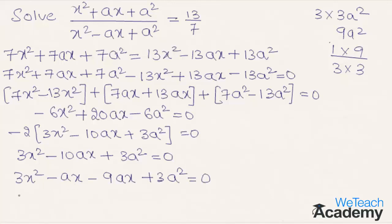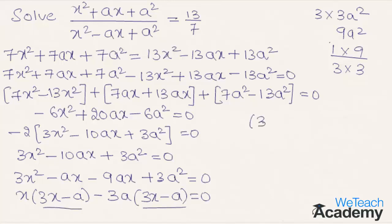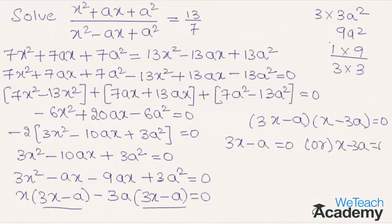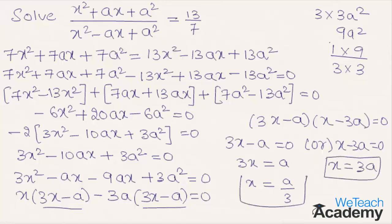From the first two terms we take x as a common factor to get x into 3x minus a, and from the last two terms we take minus 3a as a common factor to get minus 3a into 3x minus a equal to 0. Equating both factors with 0 gives 3x minus a equal to 0 or x minus 3a equal to 0. Solving, we get x equal to a over 3, and x equal to 3a.